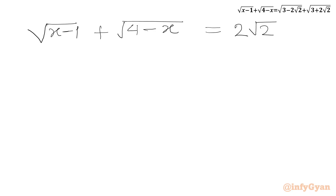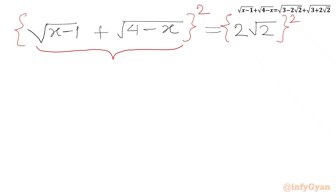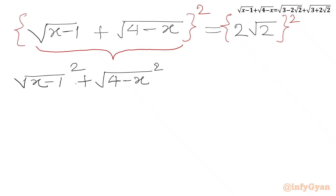Now squaring both sides, we will apply the (a plus b)² identity on the left hand side. We get: square root of (x minus 1) whole squared, plus square root of (4 minus x) whole squared, plus 2 times square root of (x minus 1) times square root of (4 minus x).